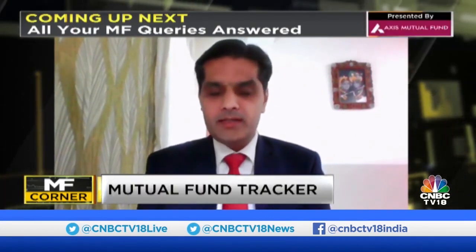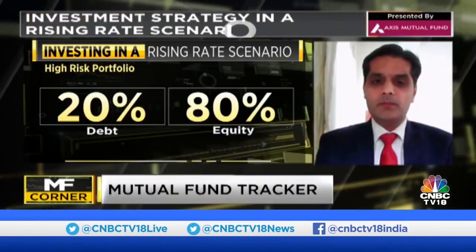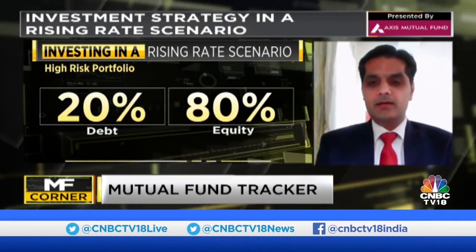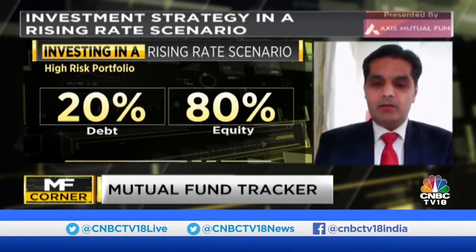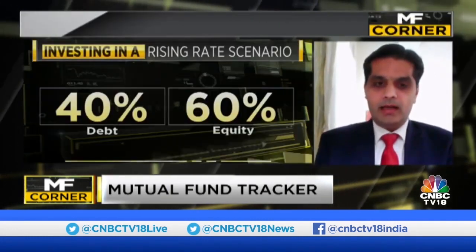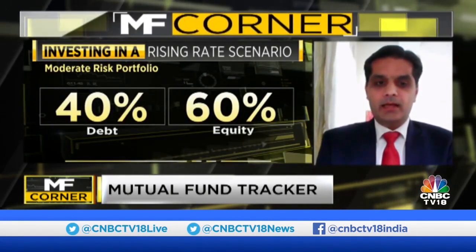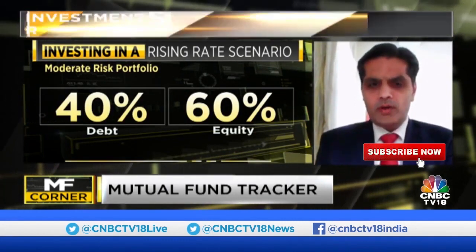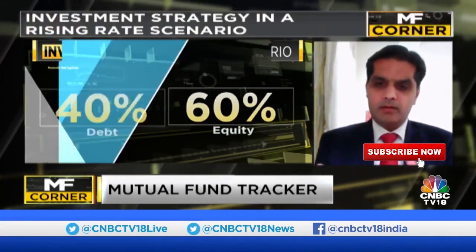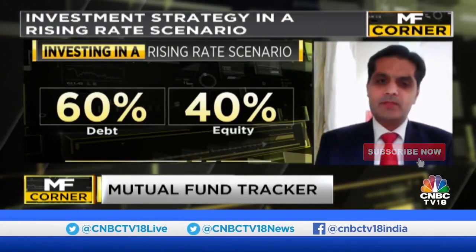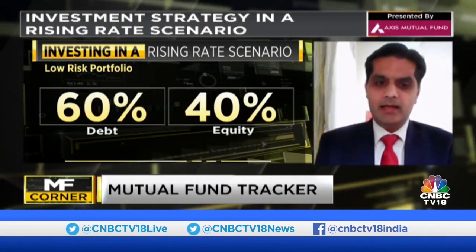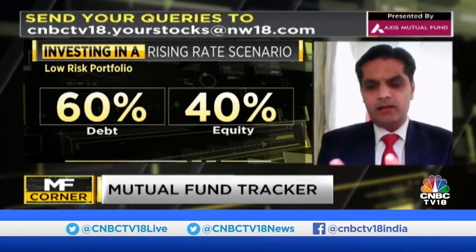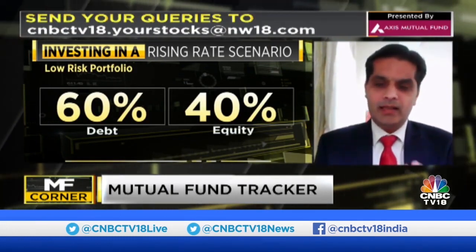And for a moderate risk portfolio, the allocation could currently be 60% in equity and 40% in debt. And for a low-risk portfolio, the allocation could be the reverse of high risk, which is 80% in debt, or 80 to 60 in debt and 40 to 20 in equity.